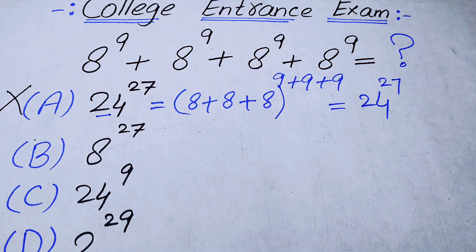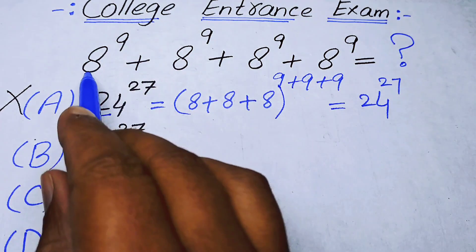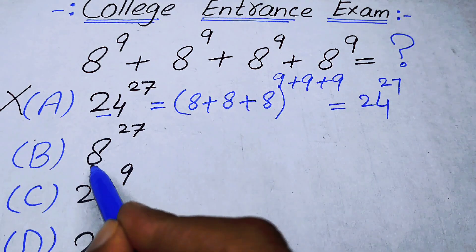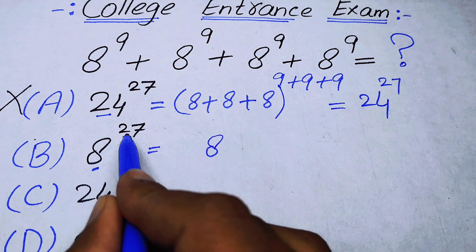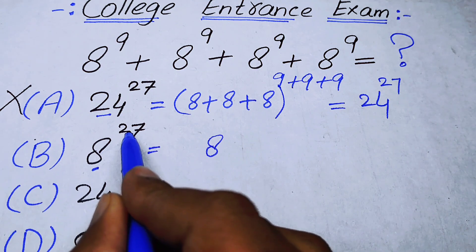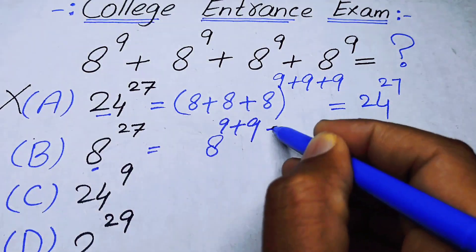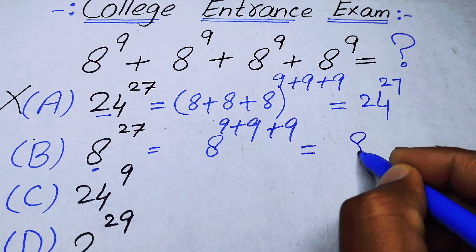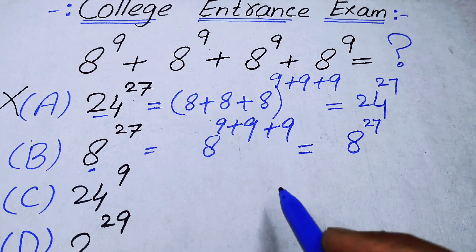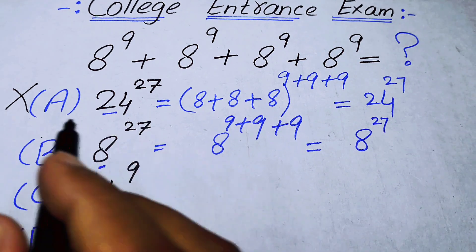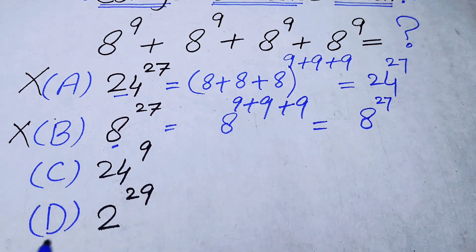Now we check option B: 8 to the power of 27. The base is already 8, and we can break the power 27 as 9 plus 9 plus 9. This gives 8 to the power of 27, but again this is the wrong answer.